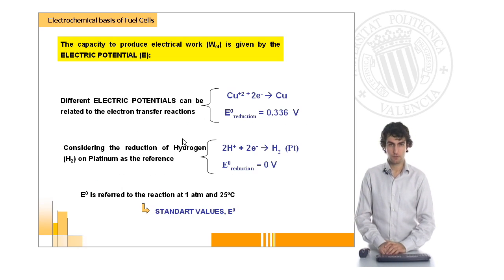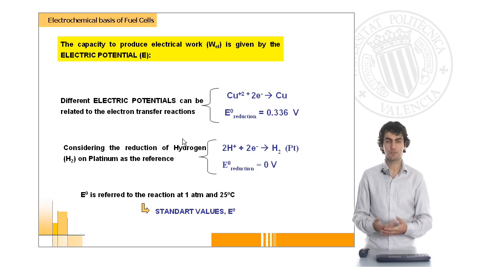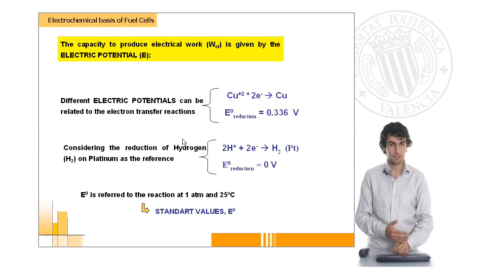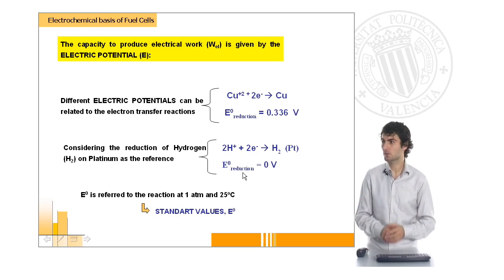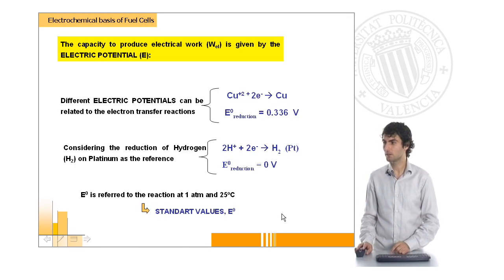It is very important when we're talking about electrochemistry to know what electric potentials are. Any redox reaction is going to produce a voltage, which represents the amount of electrical energy we can obtain from this reaction. All redox reactions involve at least a reduction and oxidation, and they are all referred to a reference reaction, which is the reduction of hydrogen, considered to have a reduction potential of zero volts. For any pair of reactions, we can have standard values.